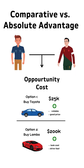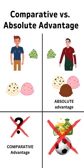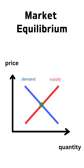Comparative versus absolute advantage — this is all about who can produce what at the lowest opportunity cost. Cristiano Ronaldo might be a more efficient ice cream scooper than you; that's an absolute advantage. But if he spends his time scooping ice cream, he loses the millions of dollars he would make playing soccer, meaning you have a comparative advantage.